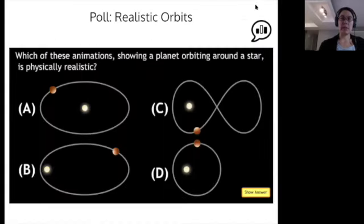So which of these animations showing a planet orbiting around a star is physically realistic? So I would argue that if you look at orbit A, the planet is orbiting in an elliptical orbit around a star, where that star is at the center of the ellipse. But remember that when we have an ellipse, the sun is at one focus, and the focus is not at the center of the ellipse, it's actually off center. So A cannot be a realistic orbit.